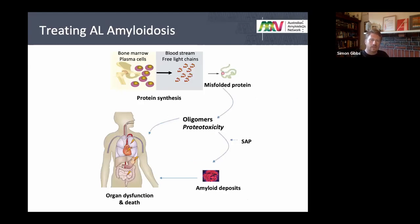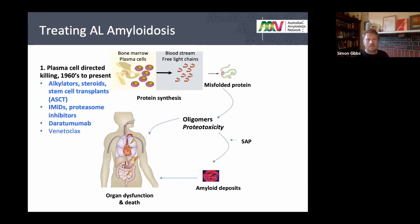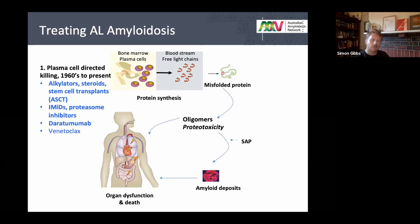For AL amyloidosis treatment, we target the excessive monoclonal light chains making the amyloid. Options include old-fashioned alkylators such as cyclophosphamide and melphalan, steroids (especially dexamethasone), stem cell transplants in selected patients, immunomodulatory therapy such as lenalidomide, the proteasome inhibitor bortezomib (Velcade), daratumumab — which will increasingly be used — and venetoclax, a targeted therapy useful in patients with a translocation between chromosomes 11 and 14.